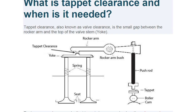Tappet clearance is the space between the top of the valve stem and the rocker arm. It allows mechanical expansion and lengthening of the valve stem and push rods as the engine warms up. It is taken to ensure positive closing of the valve and for thermal expansion of the valve. As per the text, tappet clearance — also known as valve clearance or valve lash — is the small gap between the rocker arm and the top of the valve stem, that is the yoke.